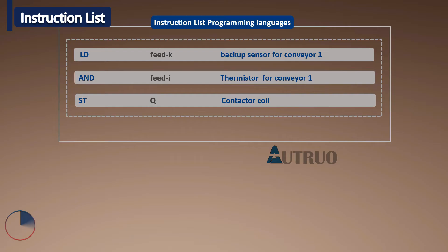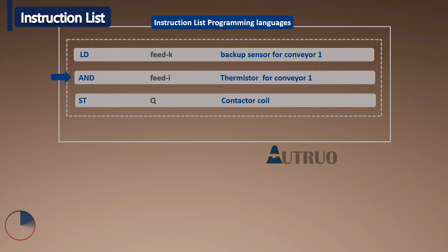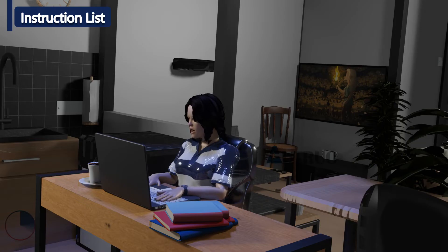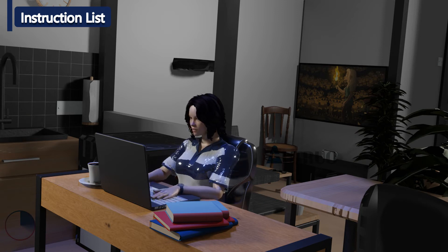The next line is a Boolean operation called AND, which is in series with K — that is, K AND I. While STQ is the last line, STQ is where the result will be stored, that is in Q.